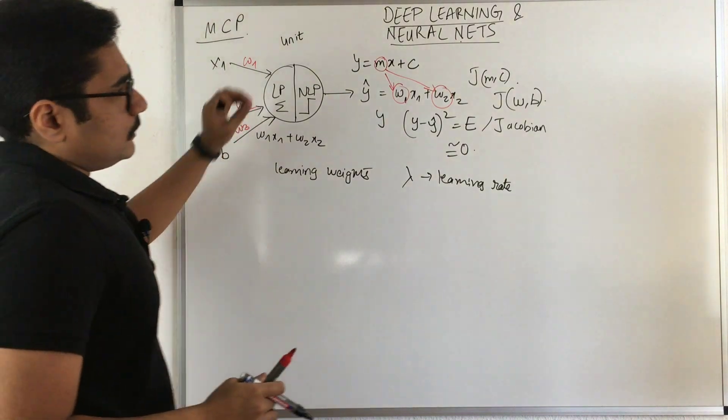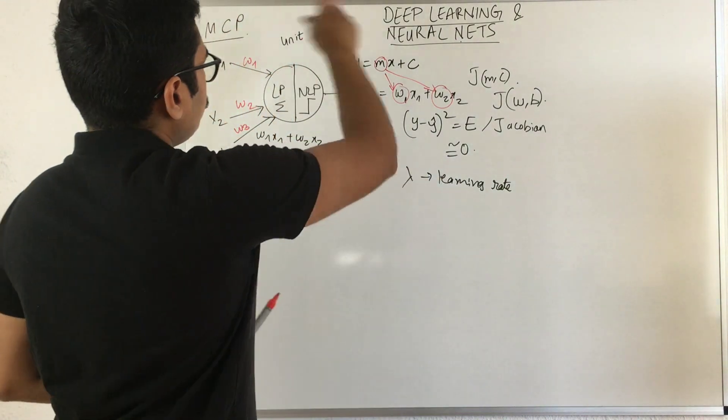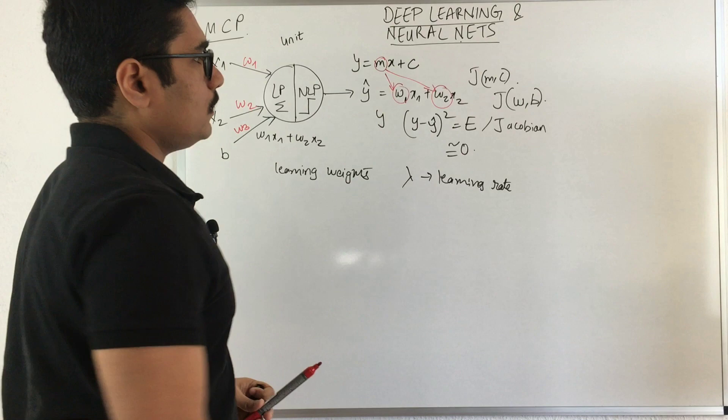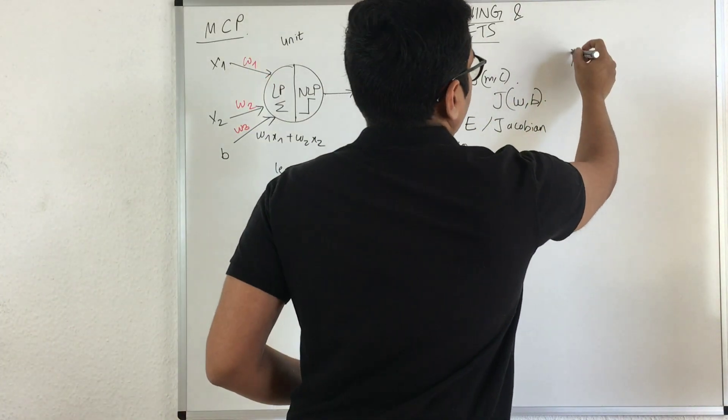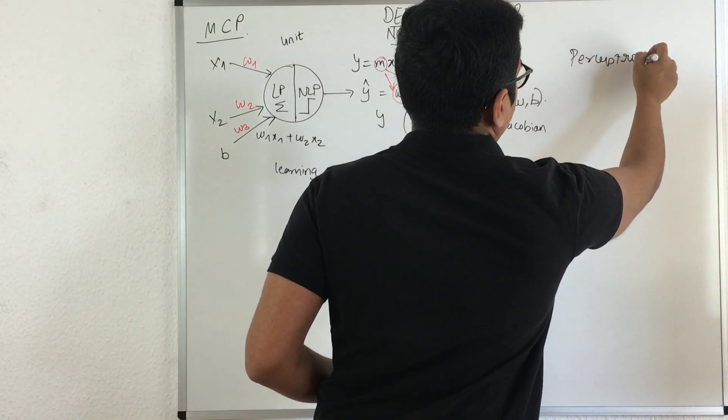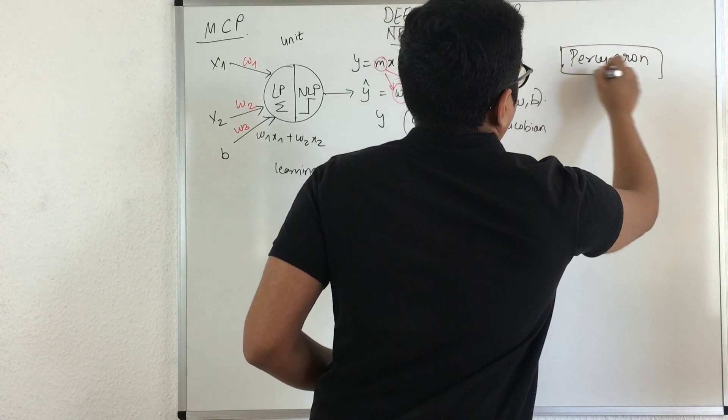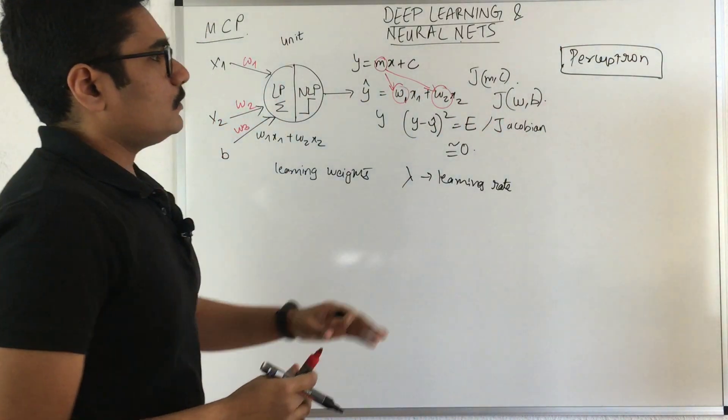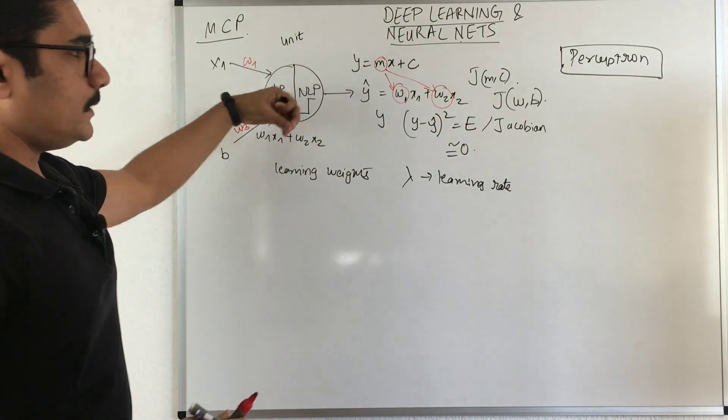After the MCP neuron, what we currently have is the perceptron. Perceptron is the most advanced neuron that we basically work on.